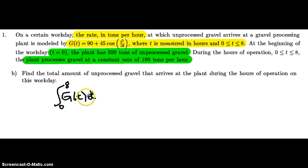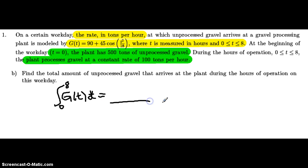Write that equation down so you can tell the AP grader what you're doing. Then put it in your calculator: math 9, y1 with respect to x, from 0 to 8, hit equals. You'll get a numeric result to copy down. The units for this result are tons — tons of unprocessed gravel that have arrived at the plant. That concludes part b.